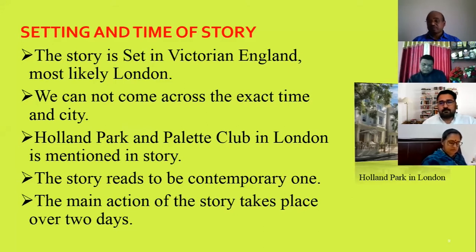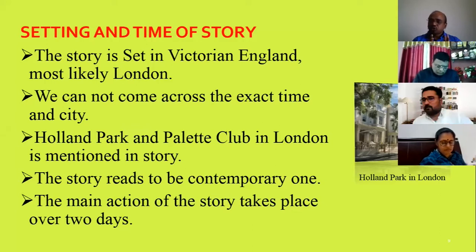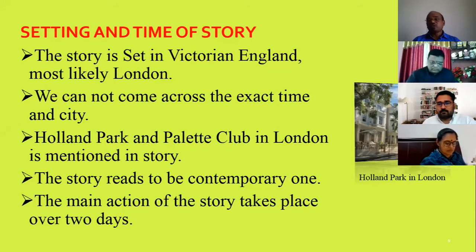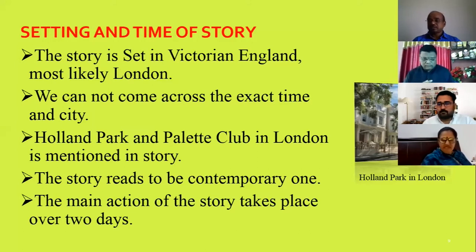The story reads as a contemporary one because it deals with issues of love — youth tempted by love, falling for beautiful girls. Secondly, there is the issue of unemployment; youth are still struggling due to unemployment, and the government makes false promises about generating employment that are not fulfilled. There is also a surprising element that suddenly happens in the life of that youth, and he is delighted at last. The main action of the story takes place over two days.